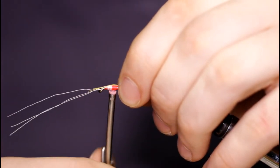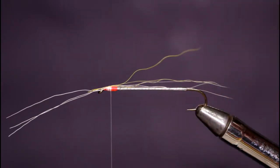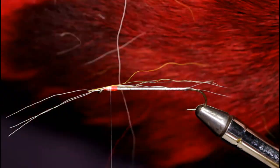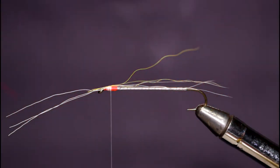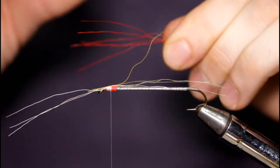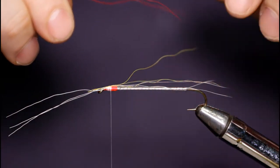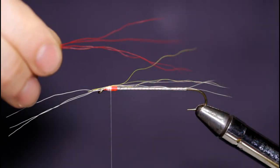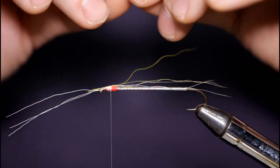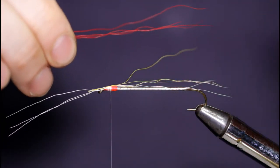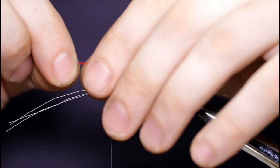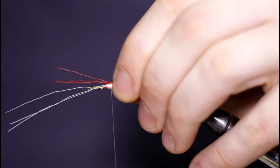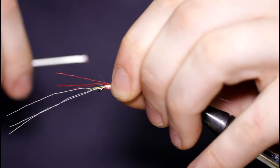Color number three is going to be some dyed red bucktail. Repeat the process. A very sparse clump of red here. Pull out the short and long fibers and even them out. Place this on top. A few wraps forward and bring the thread right back to where we started.